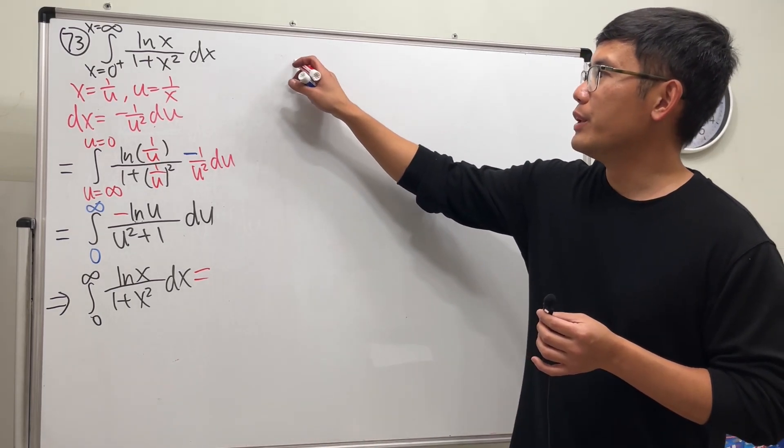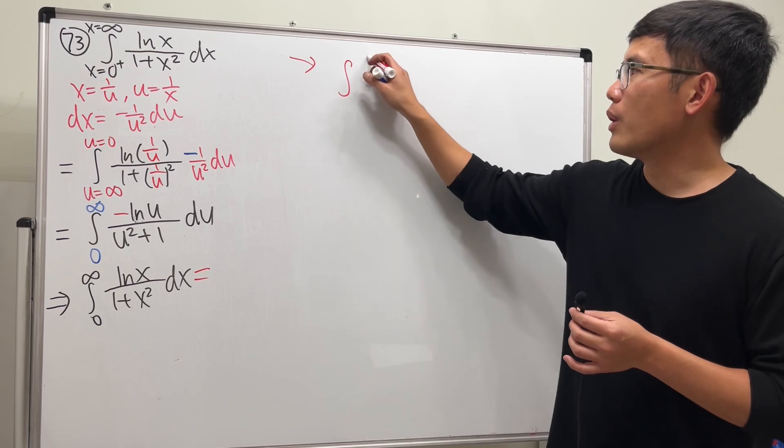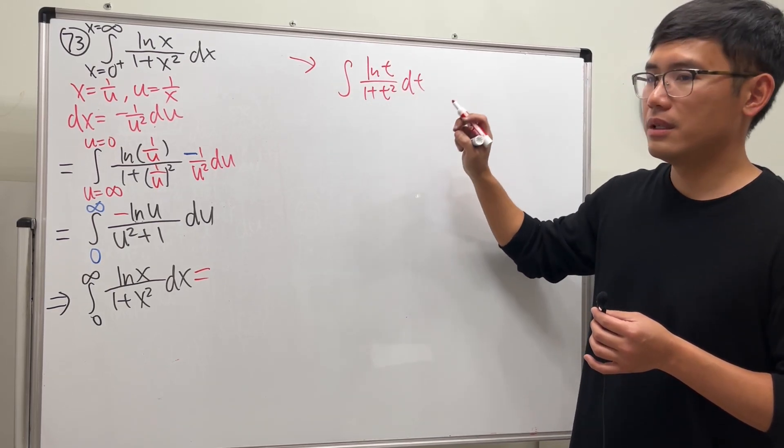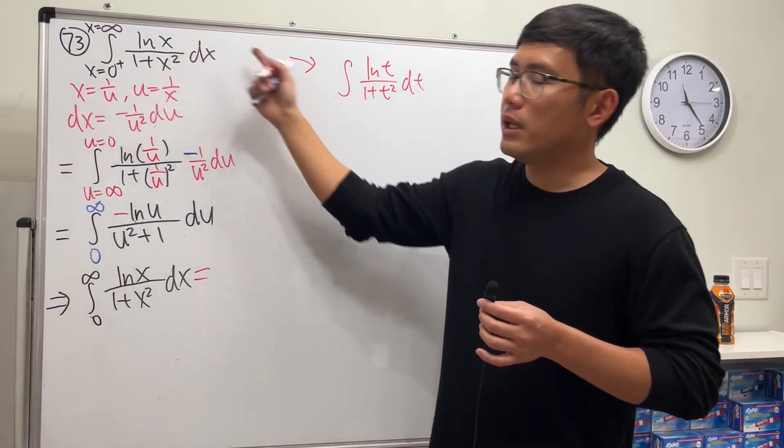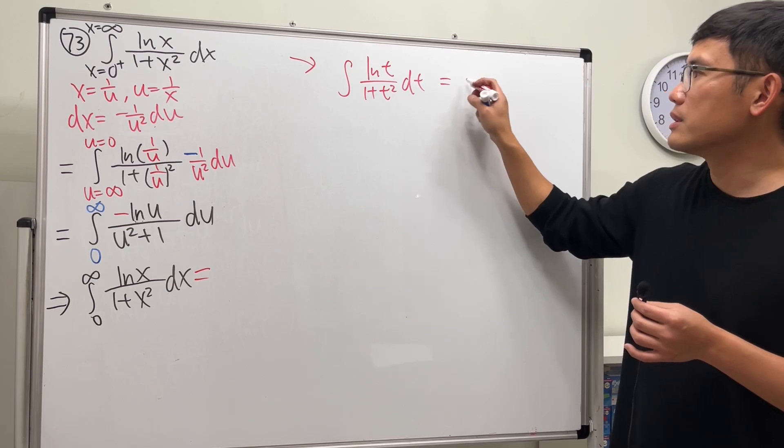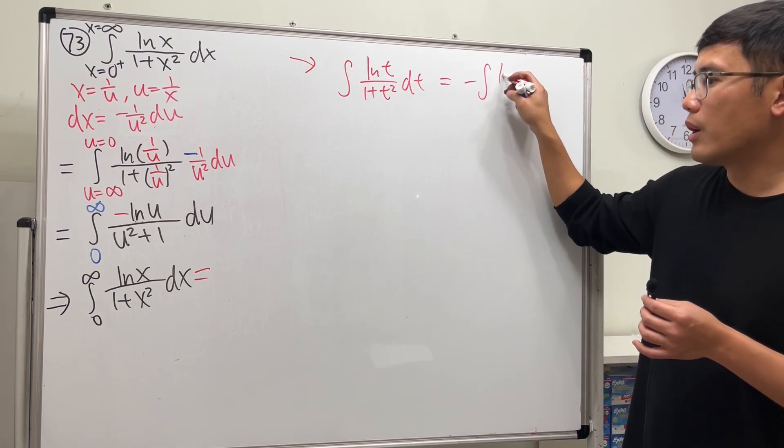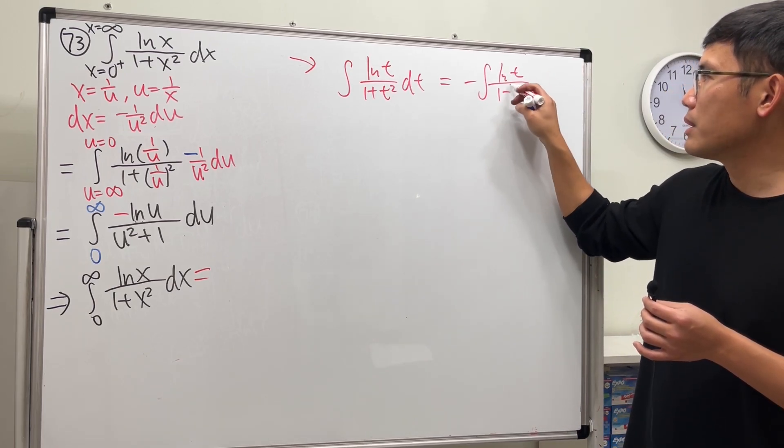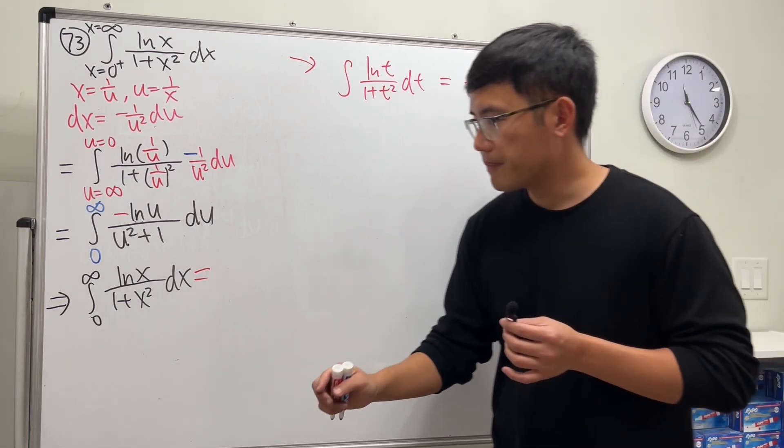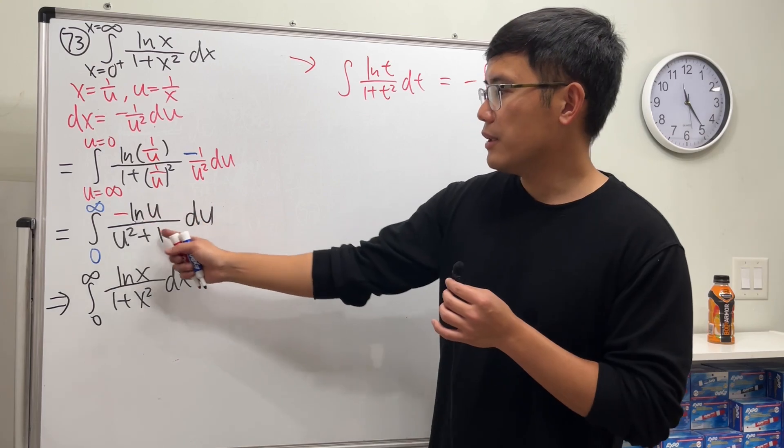But what I can do for you guys is that you can even write this out like this: integral ln t over 1 plus t squared dt. Yeah, I just put x to be t. This right here I can also put u to be t, so this right here is negative integral ln t over 1 plus t squared.